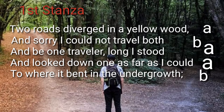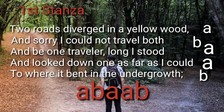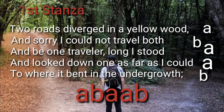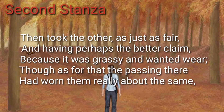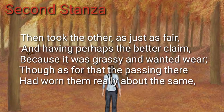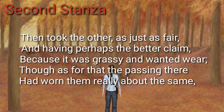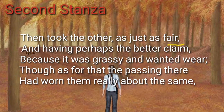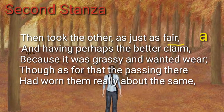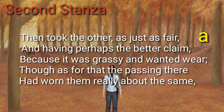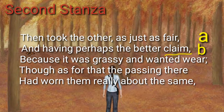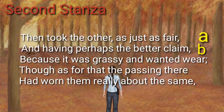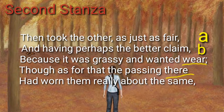So we found the rhyme scheme of the first stanza: A B A A B. This rhyme scheme is followed throughout the stanzas of the poem. In the second stanza, the last word of the first line is 'fair', so name it as A. The last word of the second line is 'claim' — name it as B, as it is not rhyming with 'fair'. In the third line, the last word is 'where', and in the fourth, 'there' — both rhyme with 'fair', so name them as A.